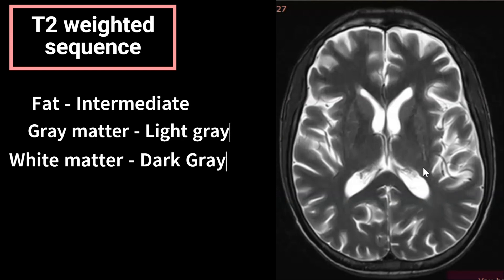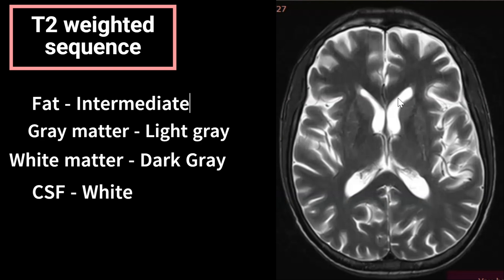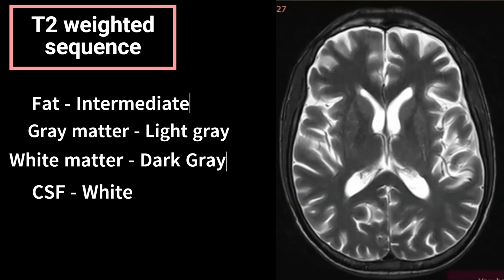White matter appears dark gray on T2, again opposite to what we saw on T1 weighted images. T2 weighted images are opposite to T1 weighted images. CSF appears white on T2 weighted sequence — wherever CSF is, the ventricles and extra-axial CSF spaces including the subarachnoid space appear bright. Any pathology which has water in it, such as edema, is well visualized on T2 weighted sequence.